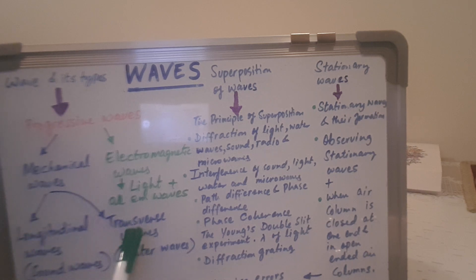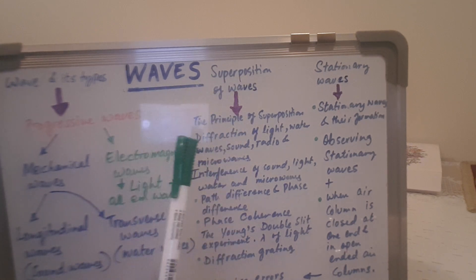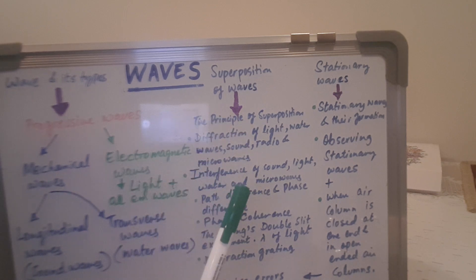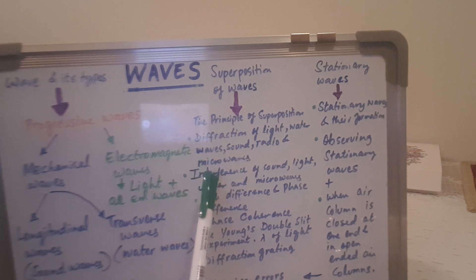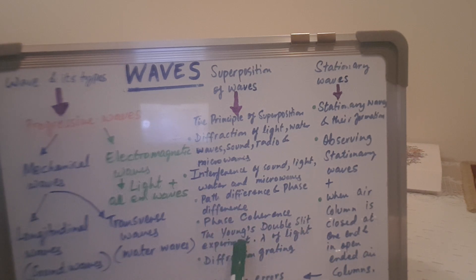Mechanical waves are further divided into longitudinal and transverse waves, which we will study in the next video. Then comes superposition of waves — the principle of superposition, diffraction of light, water waves, sound, radio, and microwaves, interference of sound, light, water, and microwaves, path difference and phase difference, phase coherence, the Young's double slit experiment, wavelength of light, and diffraction grating.